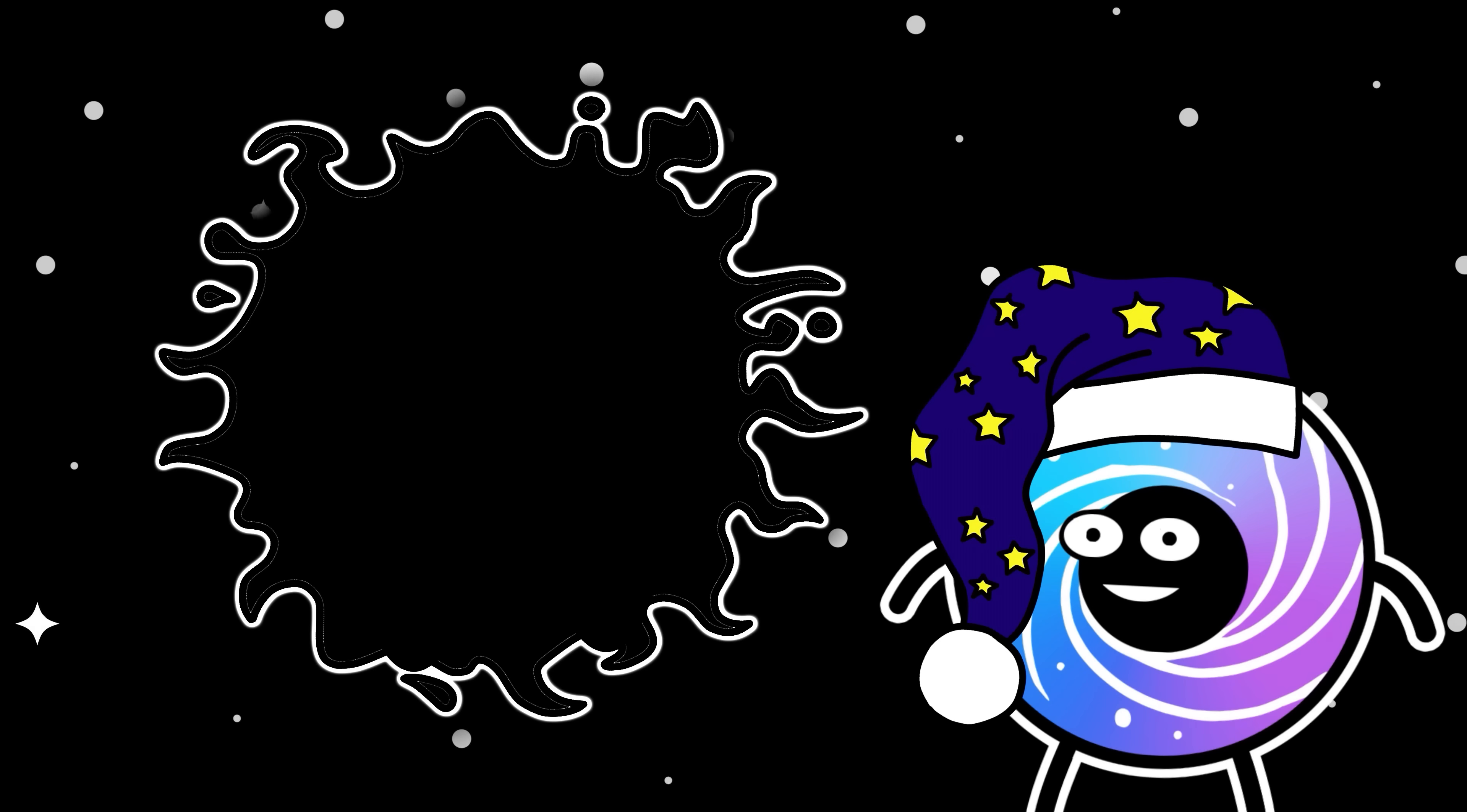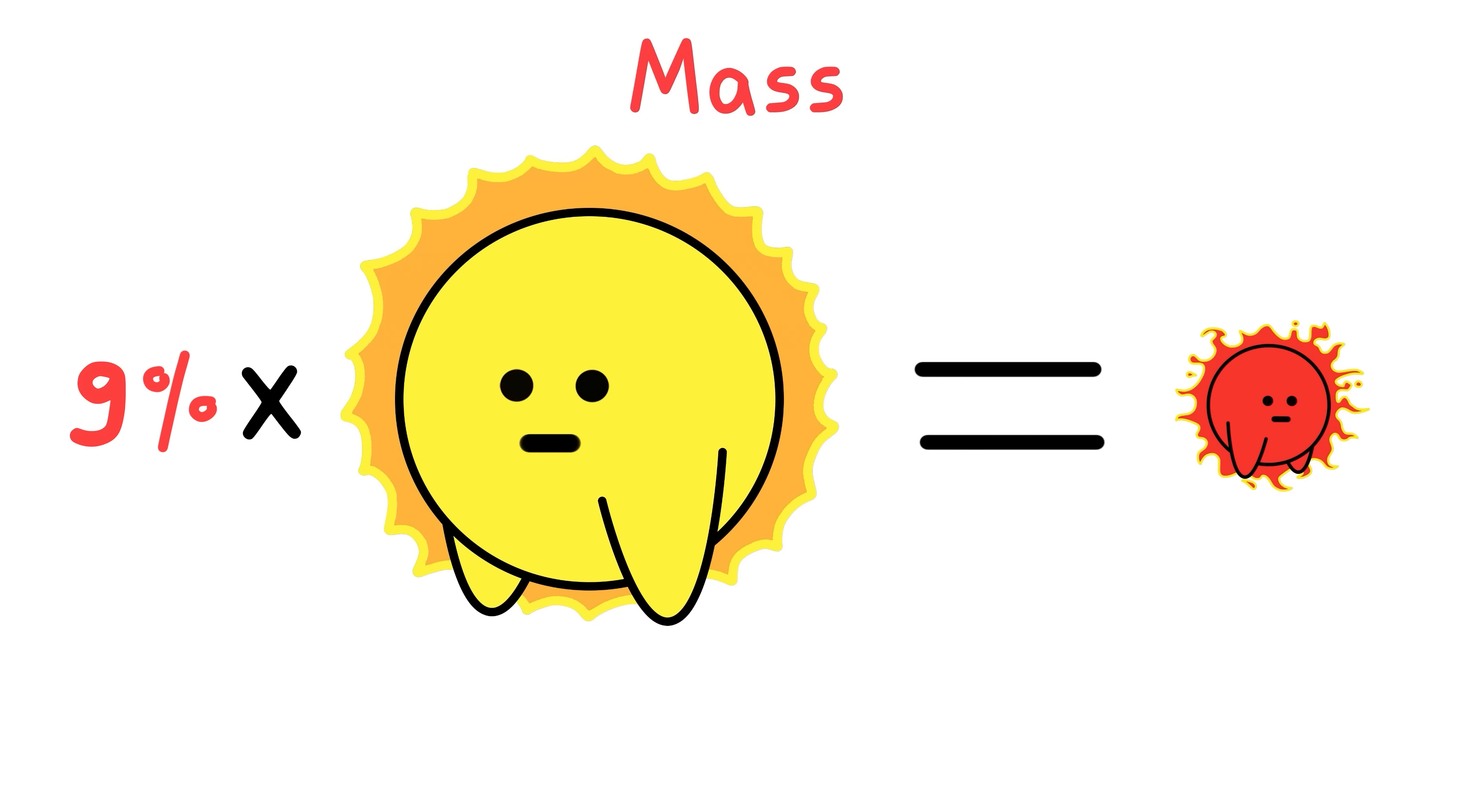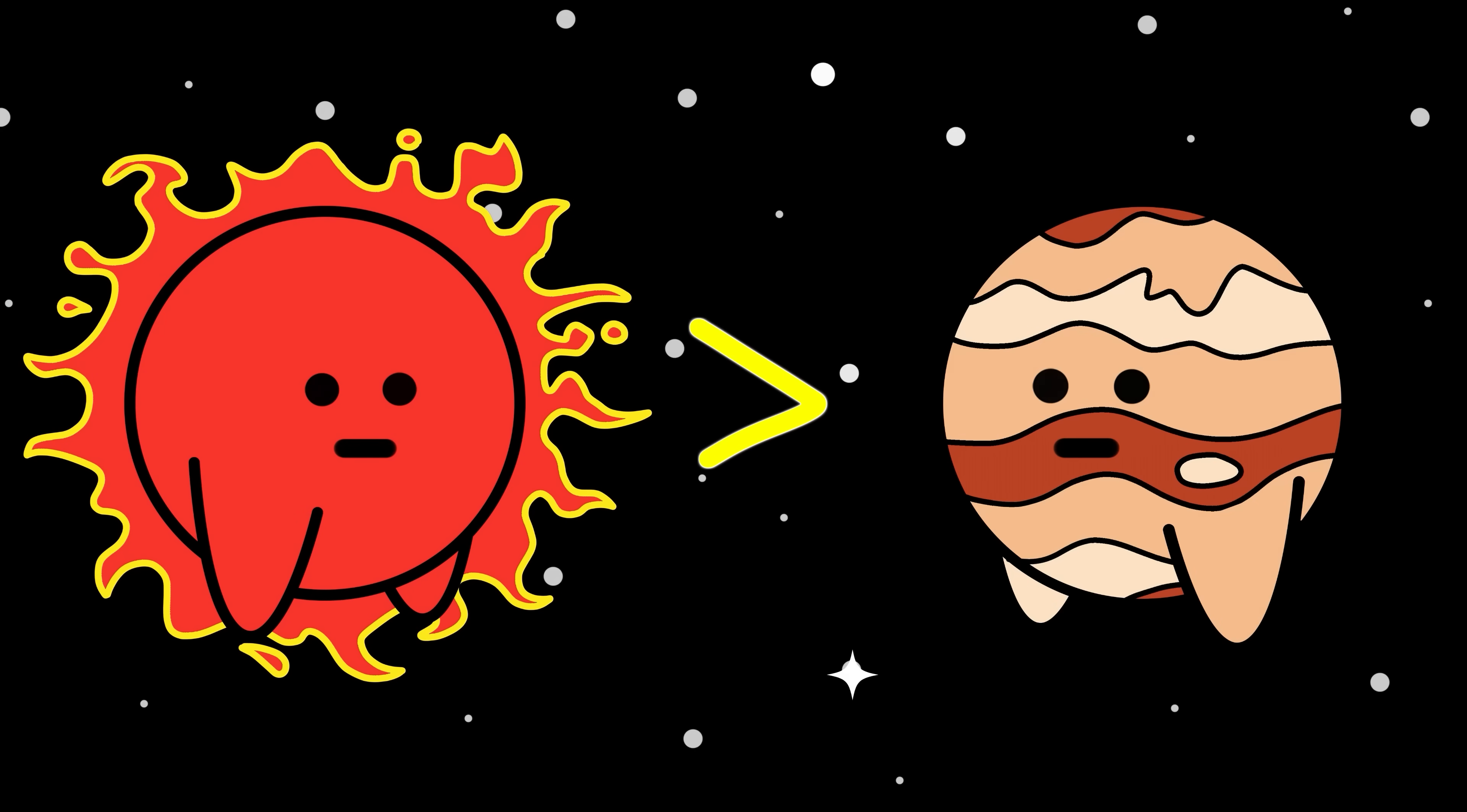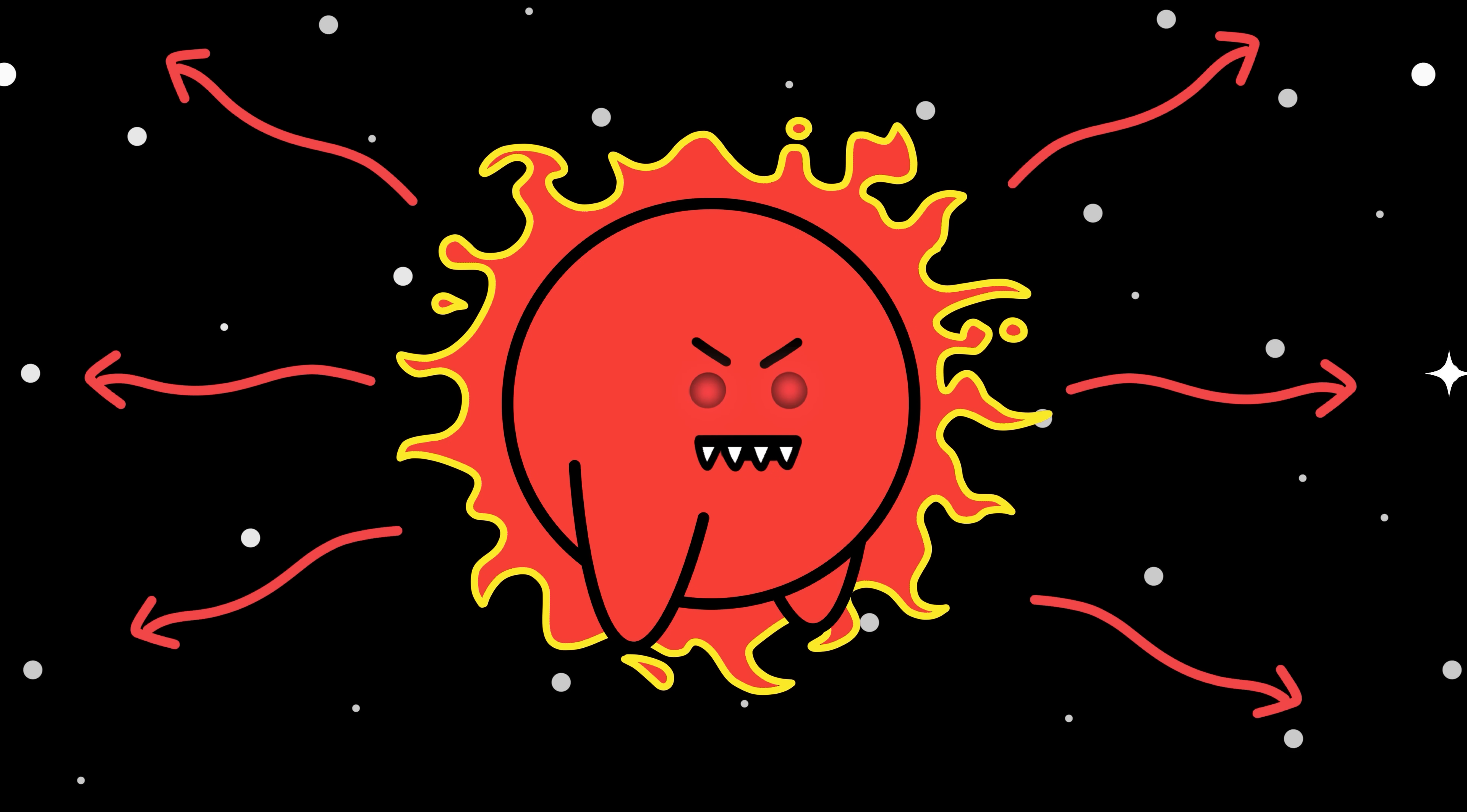A real example of a red dwarf like this is TRAPPIST-1. Compared to our sun, it's only 9% the mass, 12% of its radius, and 0.05% of the sun's brightness, and half its temperature. Yes, it's barely bigger than Jupiter. Though it's so crazy that it blasts out storms of radiation constantly.